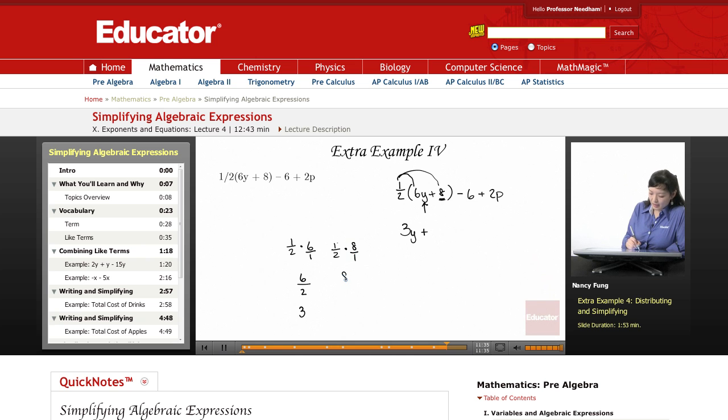1 times 8 is 8 on top, 2 times 1 is 2 on the bottom. And then to simplify, 8 divided by 2 is 4. And we have no variable.